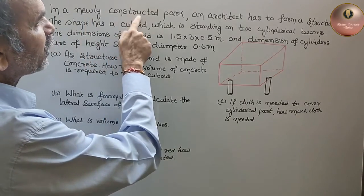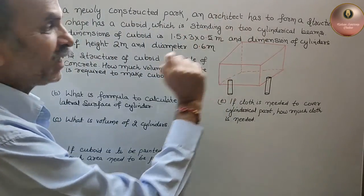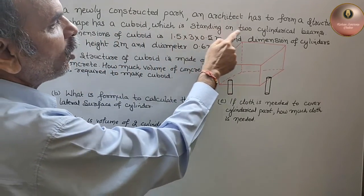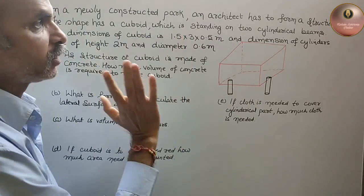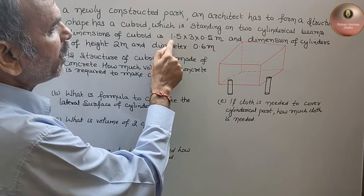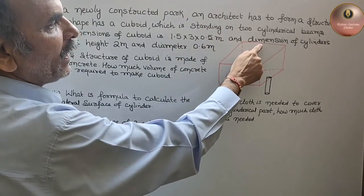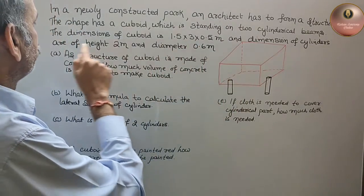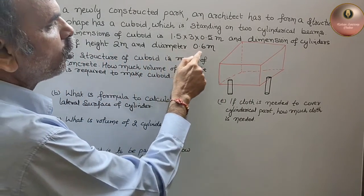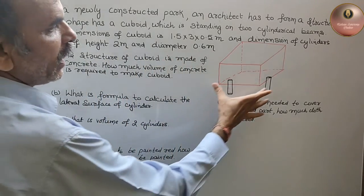In a newly constructed park, an architect has to form a structure. The shape has a cuboid which is standing on two cylindrical beams. The dimensions of the cuboid are 1.5 × 3 × 0.5 meters, and the dimensions of the cylinders are height 2 meters and diameter 0.6 meters. So this is your structure.